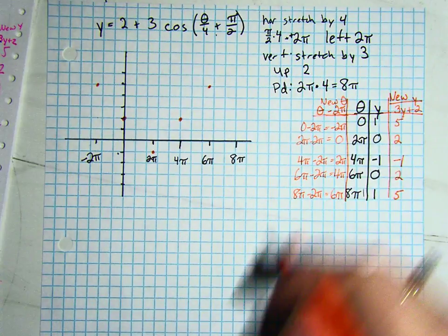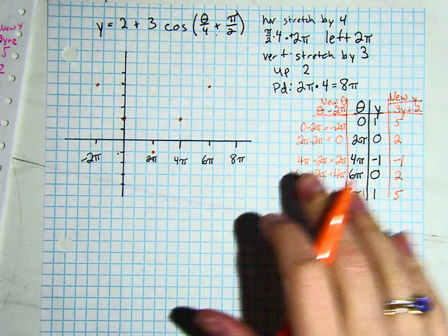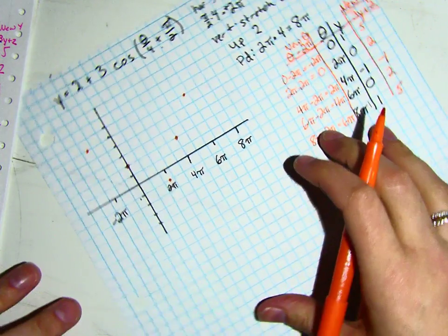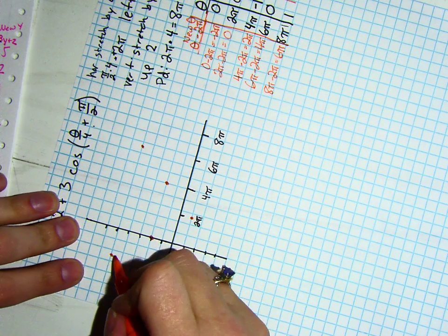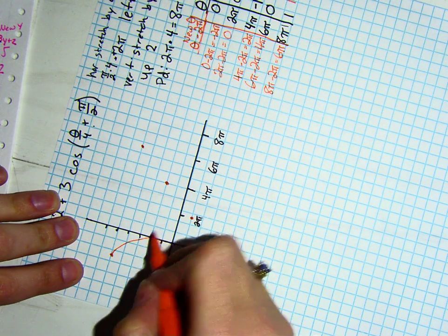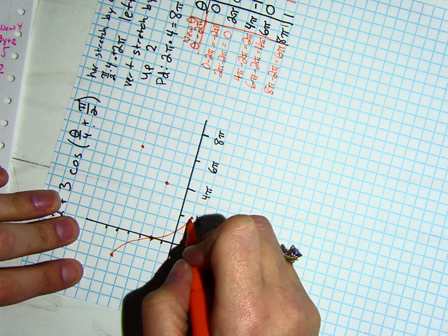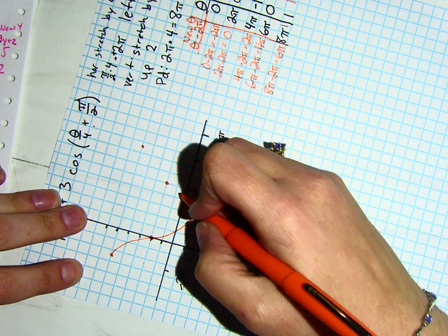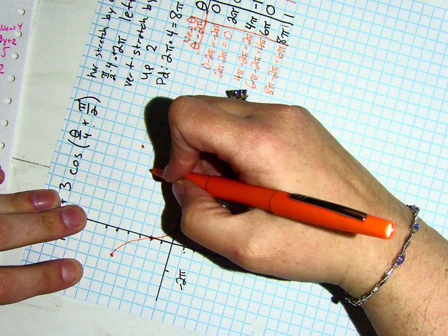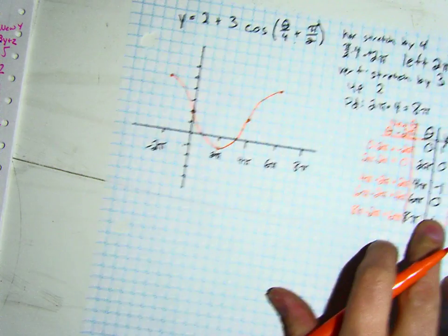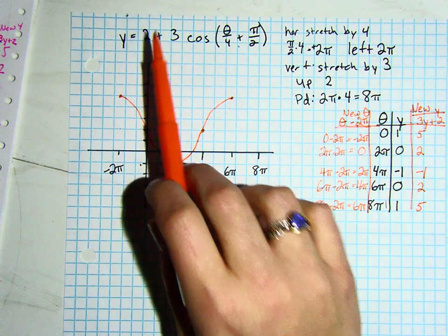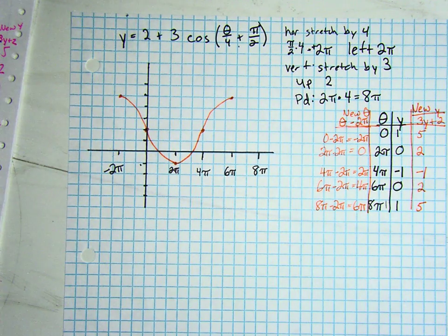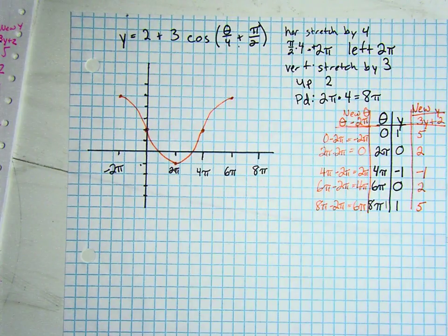And then, if you are right-handed, because it is hard to draw these without being able to see the dots, turn your paper sideways so that you can see where you're going and make your curve. There is your graph of y equals 2 plus 3 cosine of theta divided by 4 plus pi over 2.